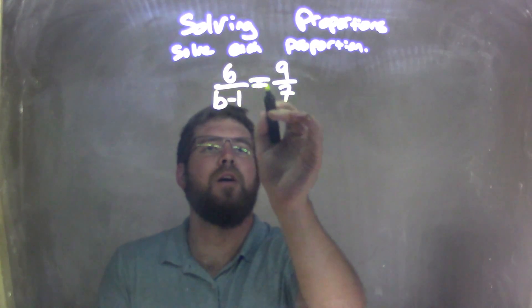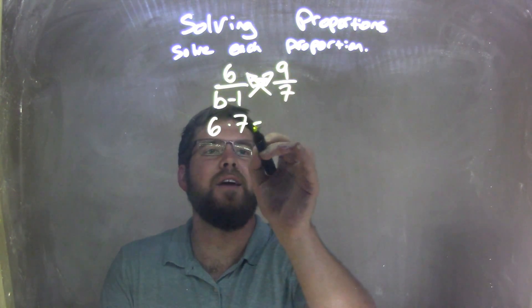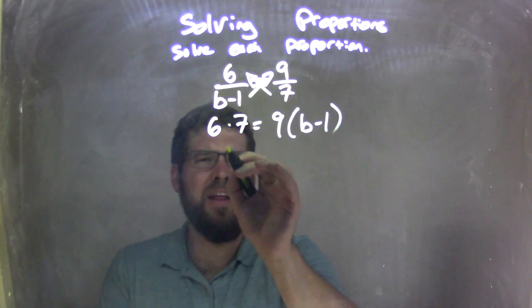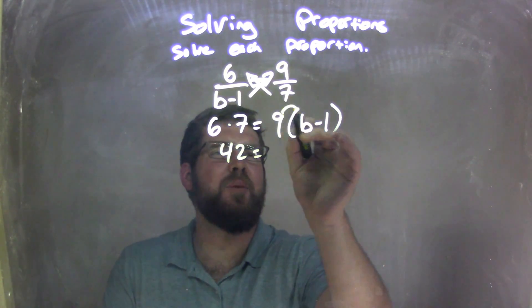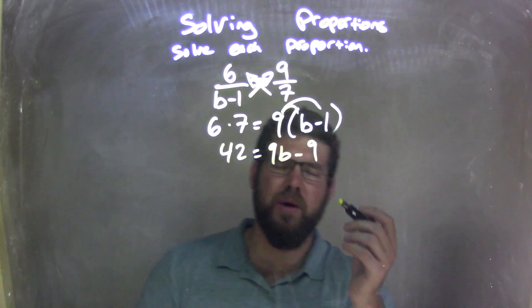First thing, I need to cross-multiply. 6 times 7 over here and 9 times b minus 1. Well, 6 times 7, that's 42, and distribute the 9, we have 9b here minus 9 times 1, right?